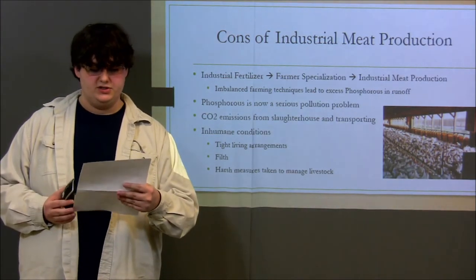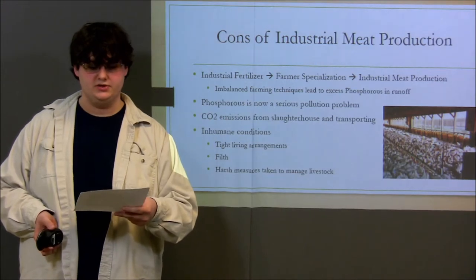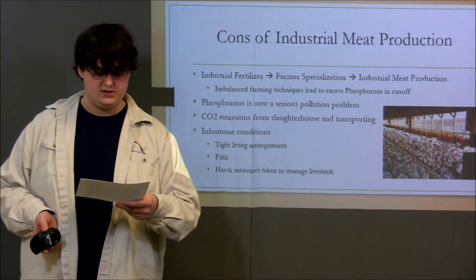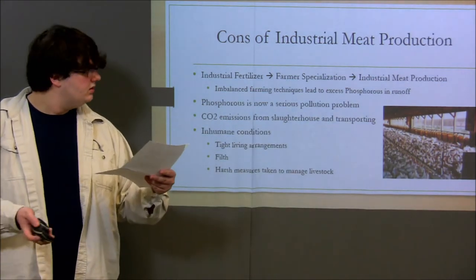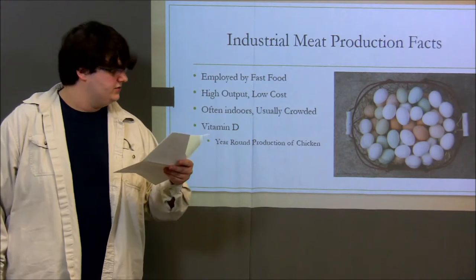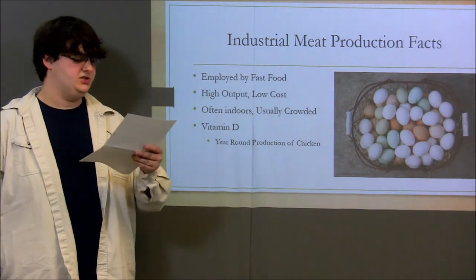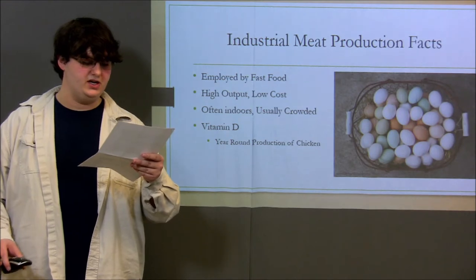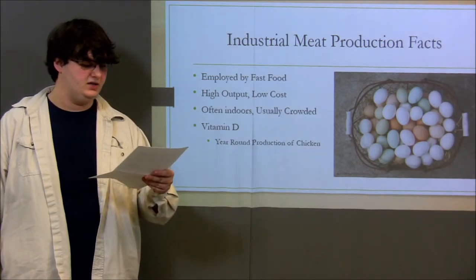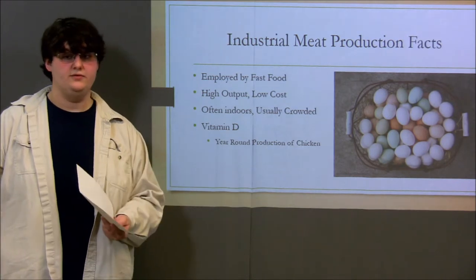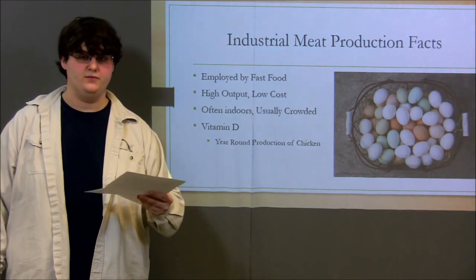Combine that with the methane gas production of cows and the CO2 waste produced by slaughter and transport practices common in the industrial meat industry, and you'll see that the combined environmental costs are quite large. Further, many critics claim that the conditions in which the animals are kept are inhumane. And despite these costs, many fast food joints still source their meat and eggs from industrial farming operations. A fun fact about industrial meat production is that many facilities house their animals indoors. In the case of chickens, this was only recently made possible by the introduction of vitamin D-fortified feed, because roof cover prevented the chickens from receiving sunlight and forming their own vitamin D. Vitamin D is necessary for the healthy growth of baby chicks as well as for correctly and completely forming eggshells.